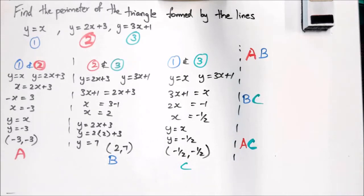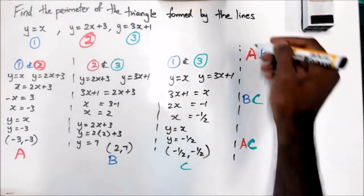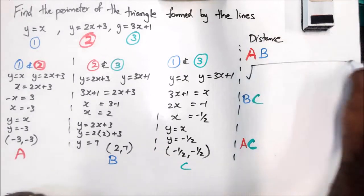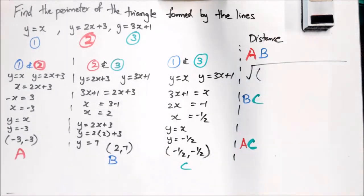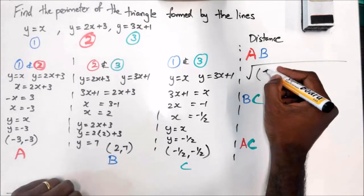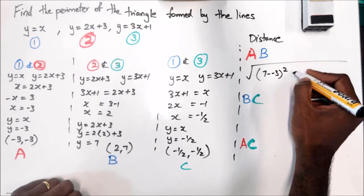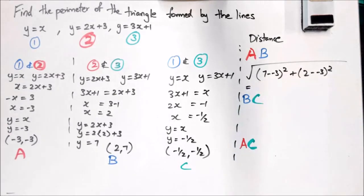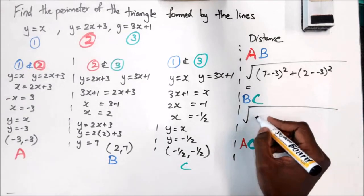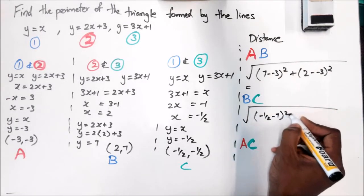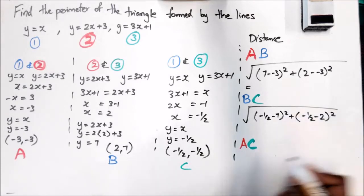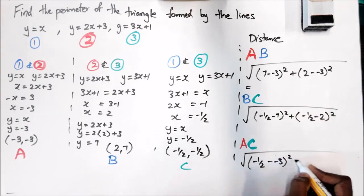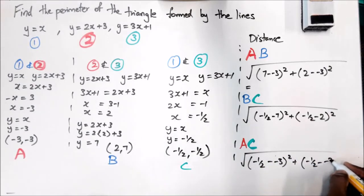Okay, so you need the distances for those three things there. Distance of AB is going to be, I'm just going to put in this square root: square root of (7 minus -3)² plus (2 minus -3)². BC I have square root of (-1/2 minus 7)² plus (-1/2 minus 2)². AC is square root of (-1/2 minus -3)² plus (-1/2 minus -3)².